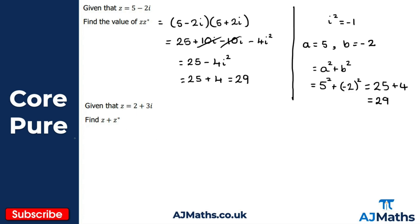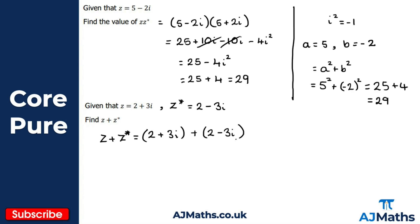For the second practice question, z equals two plus three i, and we need to find z plus its complex conjugate. The complex conjugate is two minus three i. Adding them: two plus three i plus two minus three i gives two plus two equals four, and three i minus three i cancels, leaving just four.